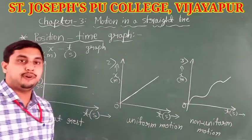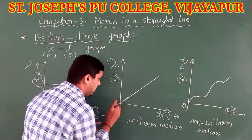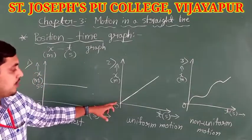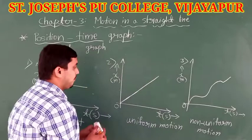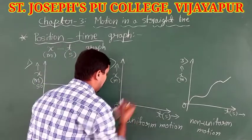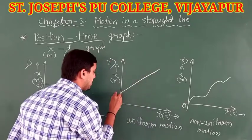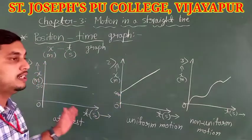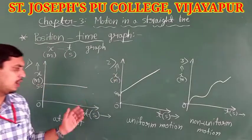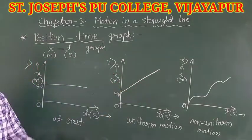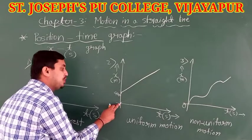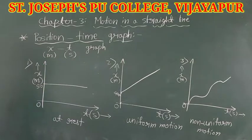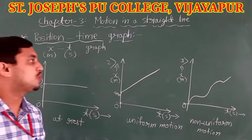For uniform motion, the object starts from the origin. But sometimes the object does not start from the origin — it will be at some other position. For example, if an object starts from 40 meters and then covers equal distance in equal intervals of time with constant velocity, the graph will be a straight inclined line but not starting from the origin.